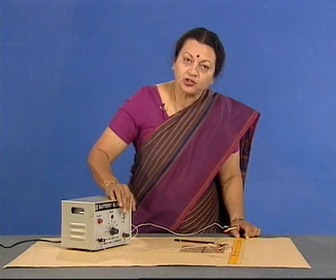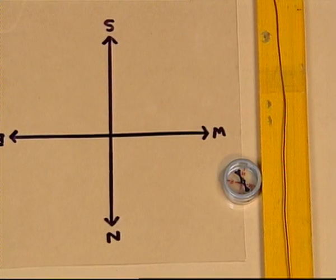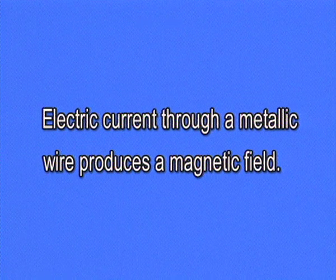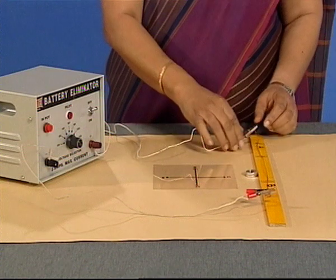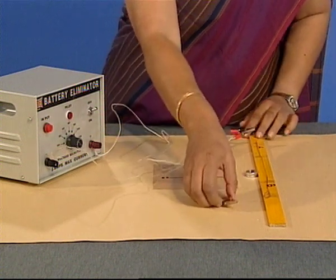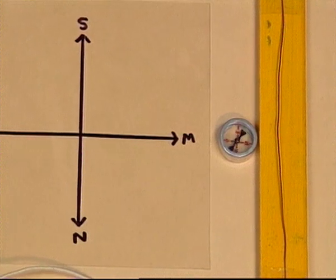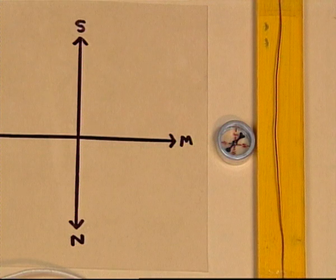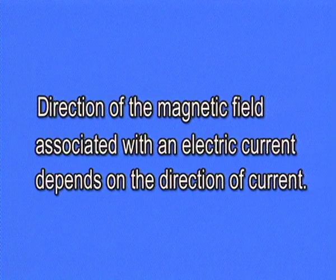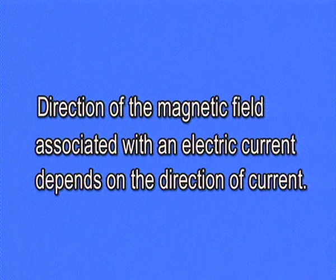Let us try again and switch on the current — the deflection is there again. A current carrying wire behaves like a magnet, or we can say electric current through a metallic wire produces a magnetic field. If we reverse the direction of current in the wire, the direction in which the compass needle pointed also gets reversed. The direction of magnetic field associated with an electric current depends on the direction of current.